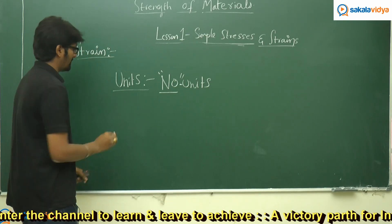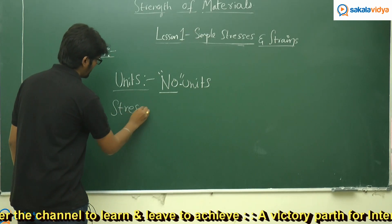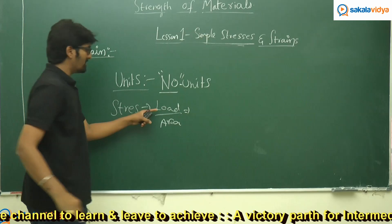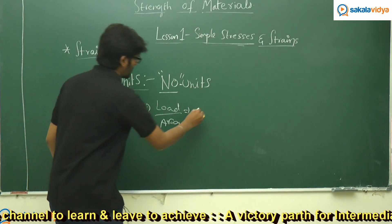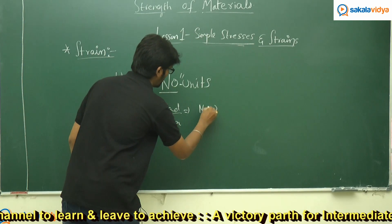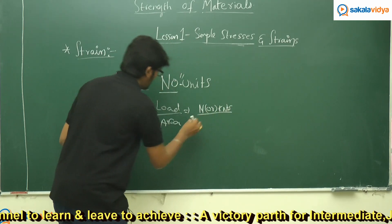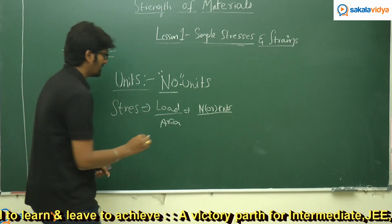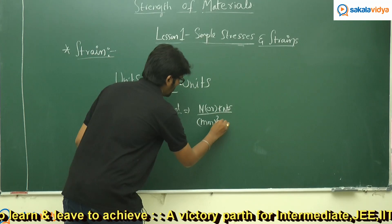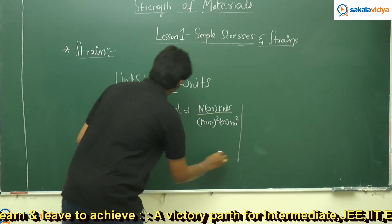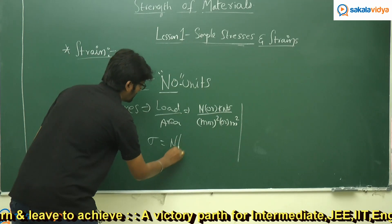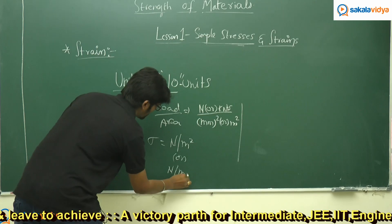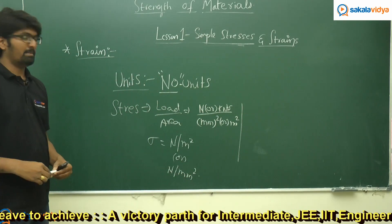I will explain why. For example, what are the units for stresses? As we know, stress is nothing but load acting per unit area. What are the units for loads? Newtons or Kilonewtons. And what are the units for area? Meter square, mm square, or centimeter square. So, units for stresses are Newton per meter square, or Newton per mm square, or Kilonewtons per meter square, or Kilonewtons per millimeter square.